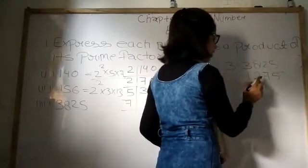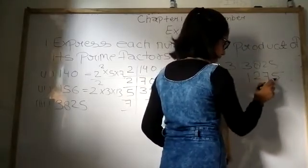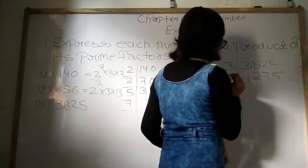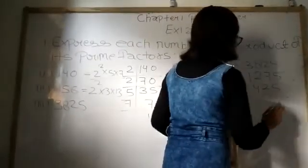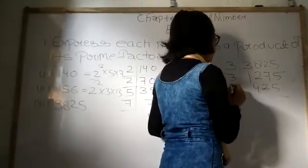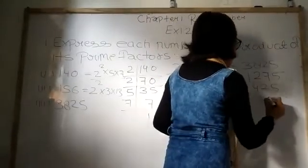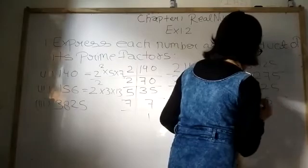Now by which number? 1 plus 2 plus 7 plus 5 equals 15, which means it can be divisible by 3. 3 times 425 is 1275. Now let us check by 5. 5 times 85 is 425.